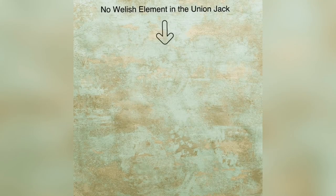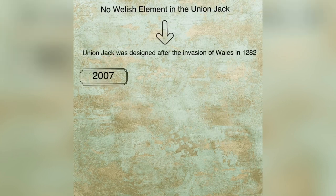We know that the United Kingdom is formed by England, Scotland, Northern Ireland, and Wales. But you must have noticed that Wales has not been represented in the Union Jack. The main reason being that the Union Jack was designed many years after the invasion and annexation of Wales in the year 1282.